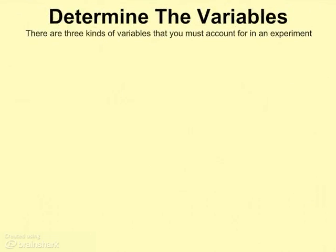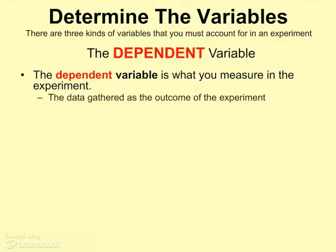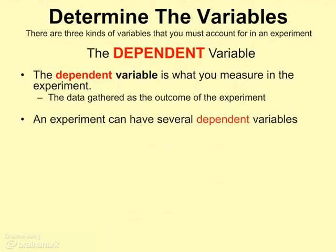The second type of variable we need to describe when evaluating an experiment is the dependent variable. The dependent variable is the thing that we measure as an outcome of the experiment — it's the data set that's gathered. In the tiger repellent rock experiment, what we were gathering as data was whether there were tiger attacks. An experiment can have lots of different dependent variables even though it can only have one independent variable, because that one independent variable could have several outcomes.